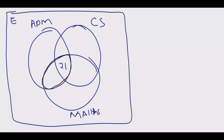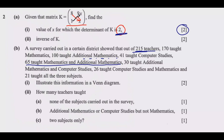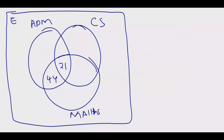65 taught mathematics and additional mathematics, but we already have 26 at the center, so the region for maths and additional maths only is 65 minus 26 = 39 — wait, 65 minus 21 = 44. So 44 goes in the intersection of maths and additional maths only. For additional maths and computer studies, 30 minus 21 = 9, so 9 goes in that intersection region.